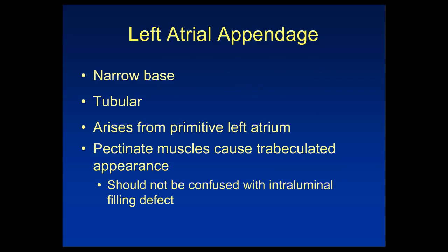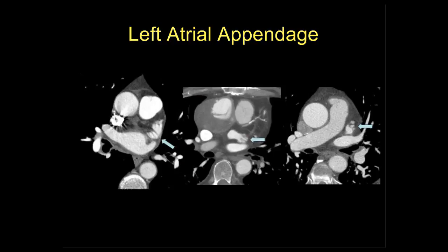Turning to the left atrium: the left atrial appendage, in contrast to the right atrial appendage, has a narrow base and is tubular in shape. Like the right atrial appendage, it originates from the primitive left atrium and has pectinate muscles causing a trabeculated appearance. These should not be confused with an intraluminal filling defect. Images from three separate patients show a variety of manifestations — typically linear or V-shaped — not a globular solitary mass as would be expected for a thrombus.